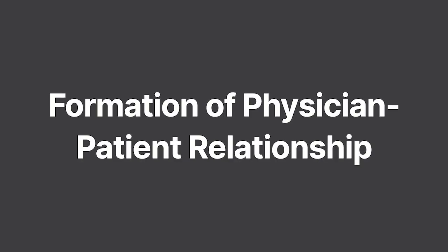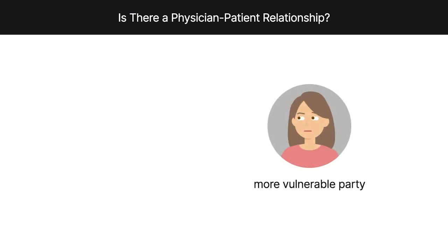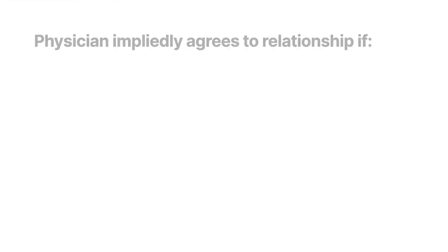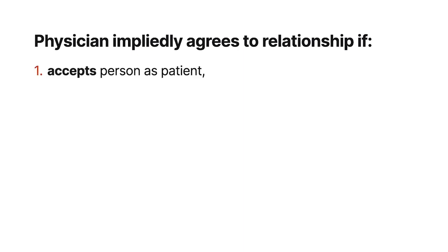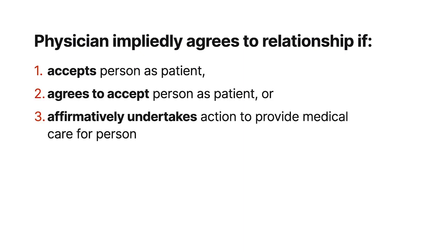Generally, a physician-patient relationship is formed when both the physician and the patient voluntarily consent to form a relationship. Although this definition may sound simple, determining whether the parties have voluntarily consented is a fact-intensive, sometimes complicated inquiry. Because patients are viewed as the more vulnerable party, the factual inquiry typically focuses on the physician's conduct. A physician impliedly agrees to form a physician-patient relationship with someone if the physician accepts the person as a patient, agrees to accept the person as a patient, or affirmatively undertakes some action to provide medical care for the person.